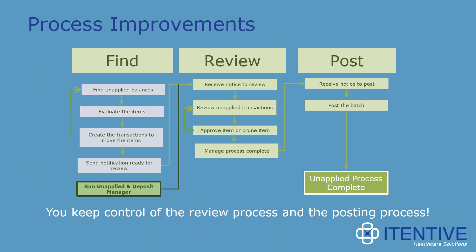This slide shows the processing of unapplied balances overall at a high level. Typically you go through a step to find the unapplied balances on patient accounts, then a review process, and then a posting process. You need to find accounts with unapplied balances, evaluate those balances and decide how you want to apply that money, create transactions to move the money, review those transactions to make sure they're doing what you want, and then post the batch to NextGen.